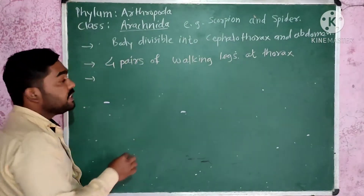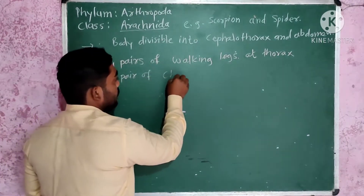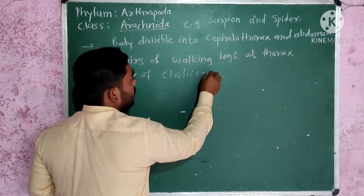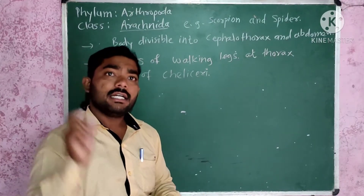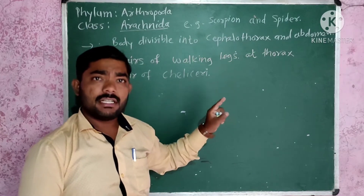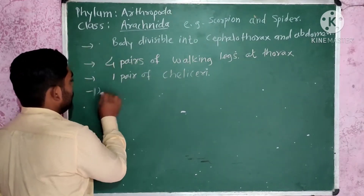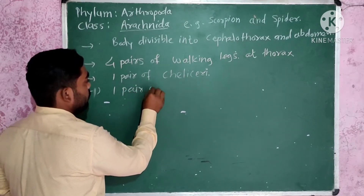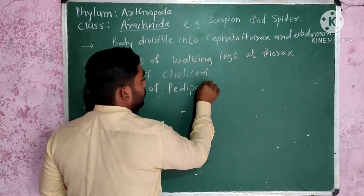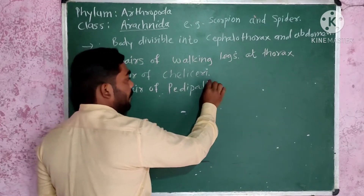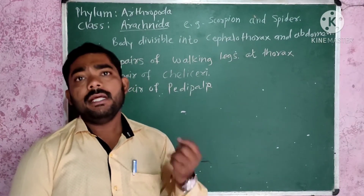Also, one pair of chelicerae. The chelicerae is the poisonous structure in spiders and it is a helpful structure for feeding purposes in the scorpion. One pair of pedipalps. The pedipalps are helpful in reproductive purpose and also helpful in feeding purpose.